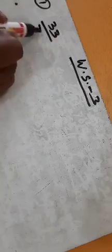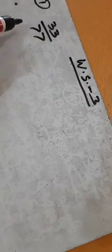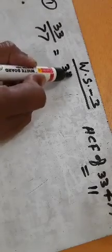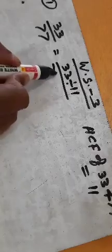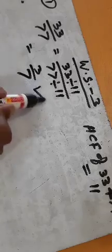Worksheet three, question number one: thirty-three by seventy-seven. The common factor of both is eleven. The HCF of thirty-three and seventy-seven is eleven. Dividing numerator and denominator by eleven gives thirty-three divided by eleven over seventy-seven divided by eleven, which equals three by seven. This is in standard form.